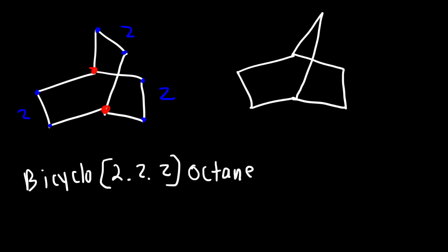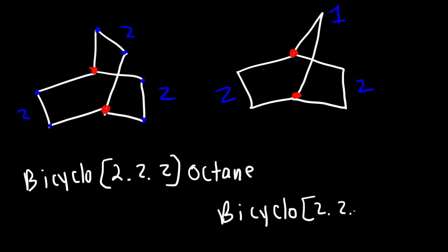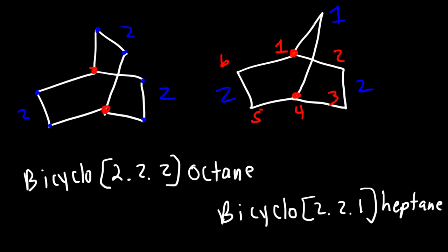For the structure on the right, here are the two bridgehead carbon atoms. We have two carbon atoms on the left, two on the right, one at the top. So that's going to be called bicyclo[2.2.1]. Two plus two plus one is five, plus the two bridgehead carbon atoms, so that's seven — heptane. So we can number it this way: carbon one, two, three, four, five, six. And the last one we can save for last, because it's the shortest link.